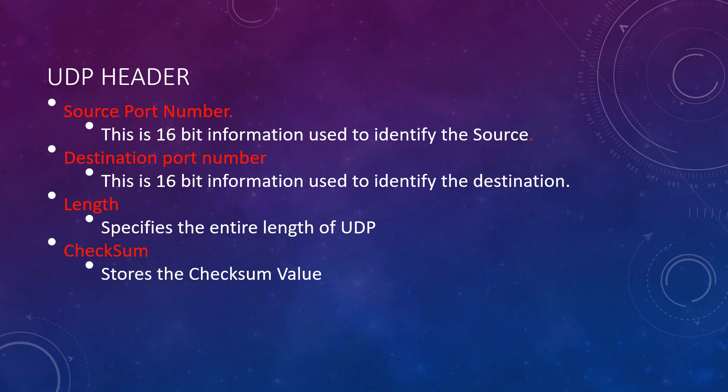What is the source port? This 16-bit information is used to identify the source port of the packet — whatever 16-bit information is present in the source port field identifies the source port in the packet. Next, what about the destination port? This 16-bit information is used to identify the application-level service on the destination machine.